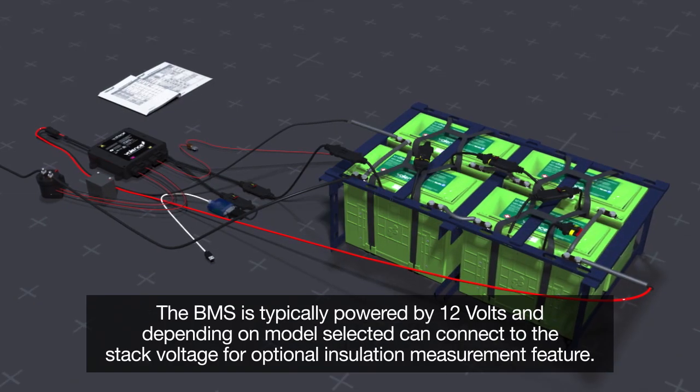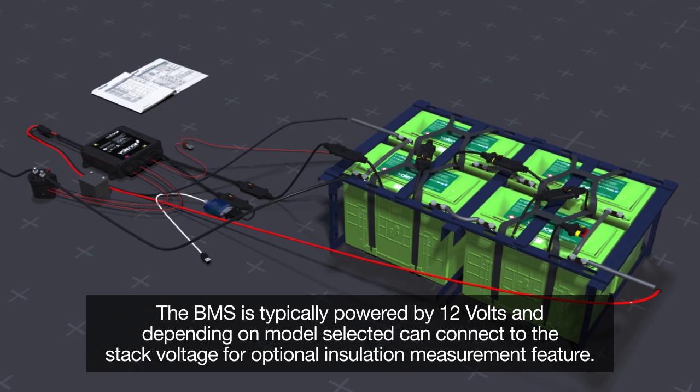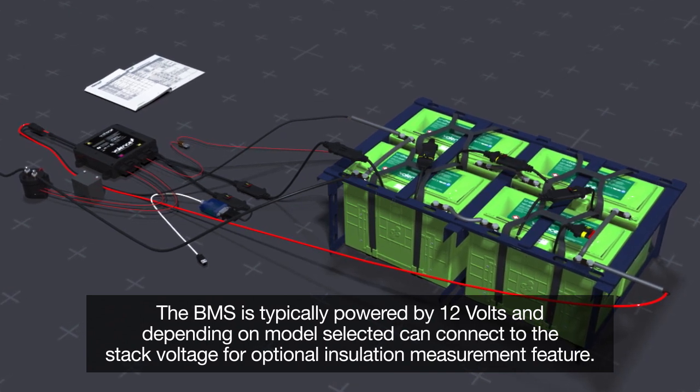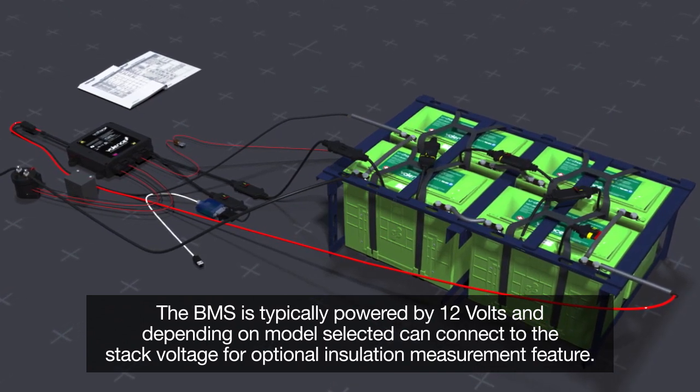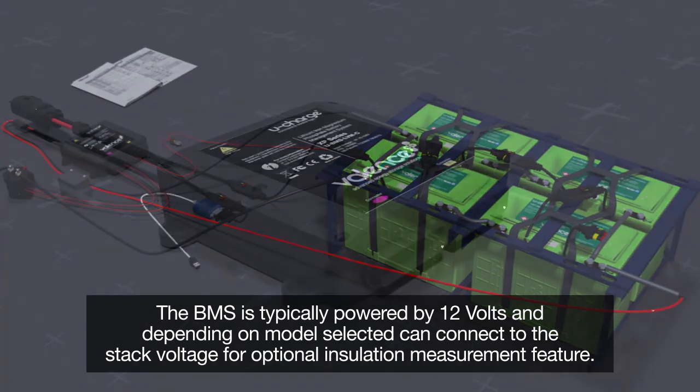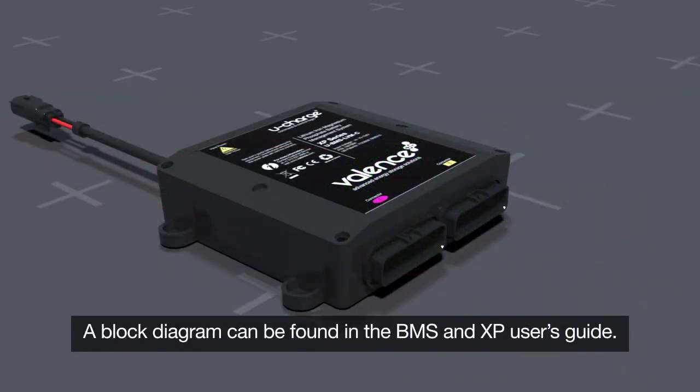The BMS is typically powered by 12 volts and depending on model selected can connect to the stack voltage for optional insulation measurement feature. A block diagram can be found in the BMS and XP users guide.